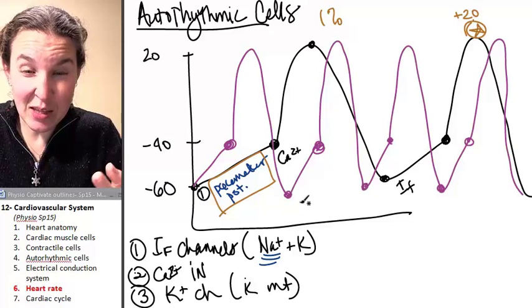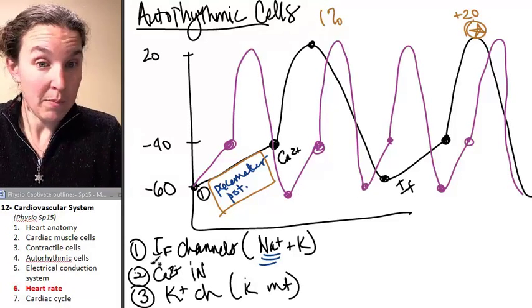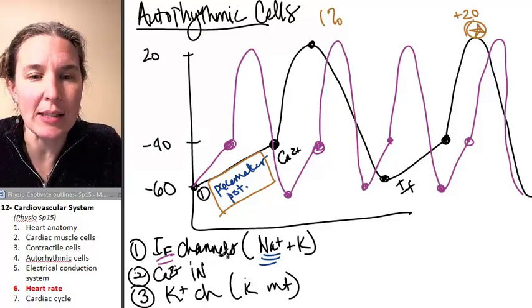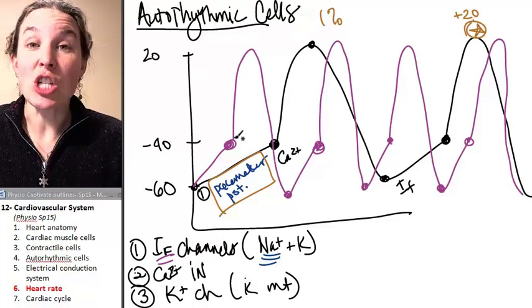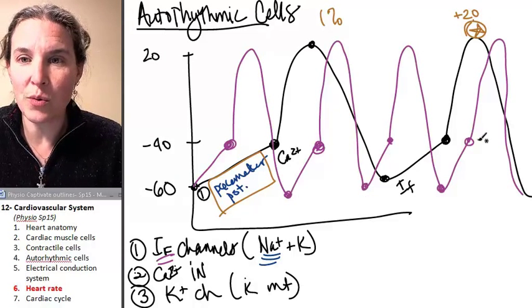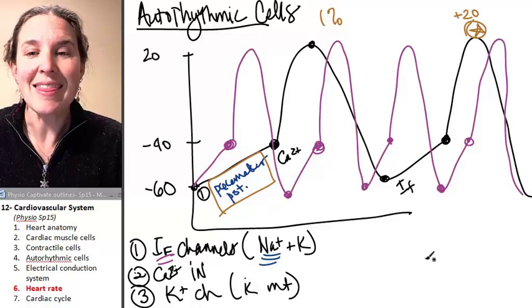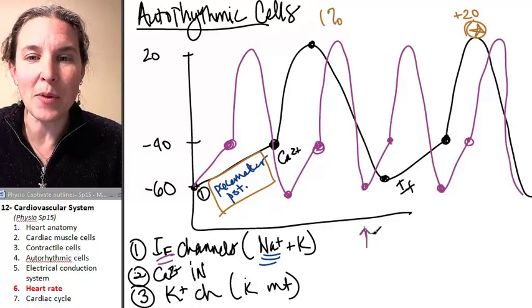By changing the pacemaker potential, by changing the rate at which I can do this multiple ways, but if I can change the speed at which we reach threshold, I can fire one, two, three, four, instead of one, two action potential messages. That's going to speed up the heart rate.